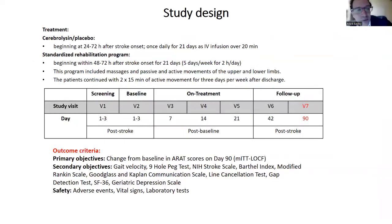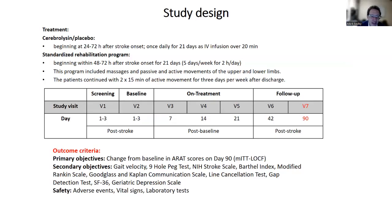It was combined with a standardized rehabilitation program beginning within 48 to 72 hours of stroke onset, which included passive and active movements. Patients also continued two 15-minute active movement sessions per week after discharge. The primary objective and outcome was the change from baseline in the Action Research Arm Test at day 90. Secondary measures included gait velocity, the nine-hole peg test, the NIH Stroke Scale, the Barthel Index, the modified Rankin scale, and communication and neglect scales.